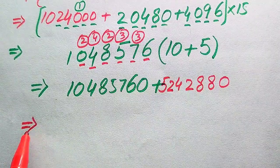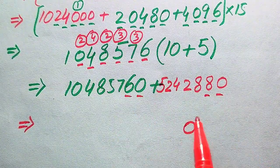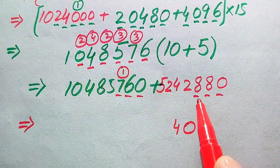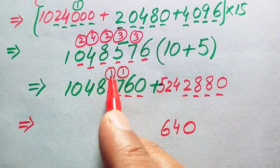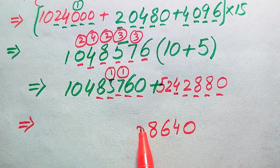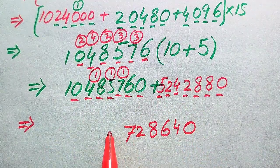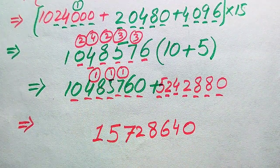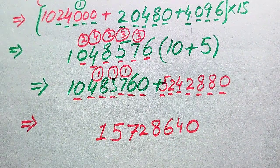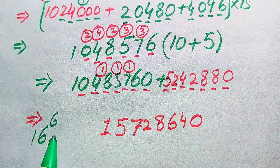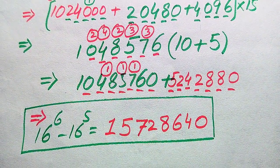In the final step, we sum 10,485,760 and 5,242,880 using traditional addition: 0 plus 0 is 0; 6 plus 8 is 14, write 4 carry 1; 7 plus 8 plus 1 is 16, write 6 carry 1; continuing through each column, our final answer is 15,728,640. This is the simplified form of 16 to the power of 6 minus 16 to the power of 5. Thank you for watching — please subscribe for more exciting videos.